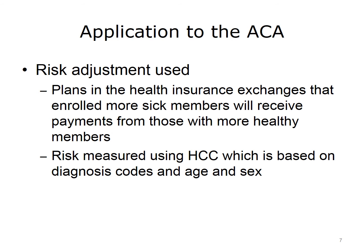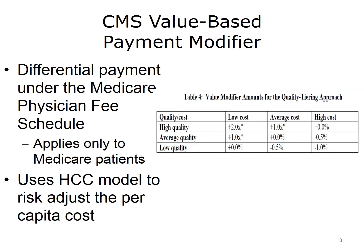For this application, risk is measured using Hierarchical Clinical Classifications, or HCC, mentioned in Lecture A, that are based on diagnosis codes, age, and sex. Another application of risk adjustment to value-based care concerns the Center for Medicare and Medicaid Services, or CMS's, Value-Based Payment Modifier. This program provides a differential payment to a physician or groups of physicians under the Medicare Physician Fee Schedule. It applies only to Medicare patients and primary care providers and is phased in by physician group size. Using the HCC model, it risk-adjusts the per capita cost.